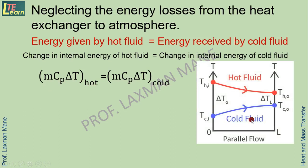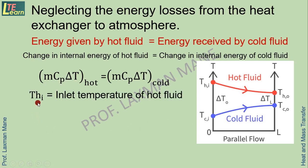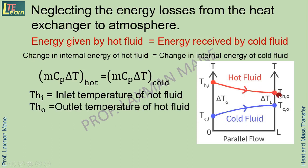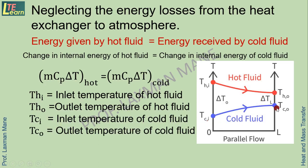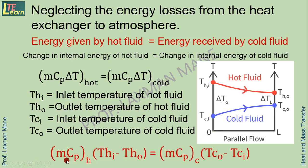The temperatures of the hot and cold fluids are defined as follows: THI is the inlet temperature of the hot fluid, THO is the outlet temperature of the hot fluid, TCI is the inlet temperature of the cold fluid, and TCO is the outlet temperature of the cold fluid. Further mathematically, the formula is written as: MCP for the hot fluid multiplied by (THI − THO) equals MCP for the cold fluid multiplied by (TCO − TCI).